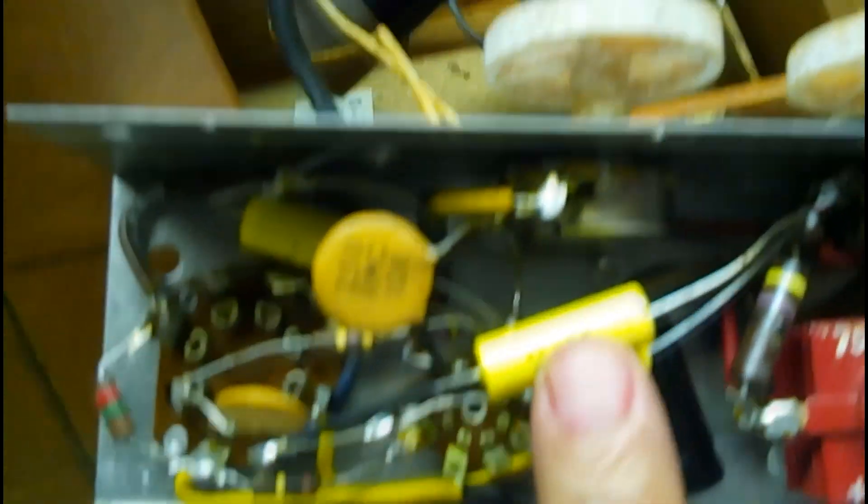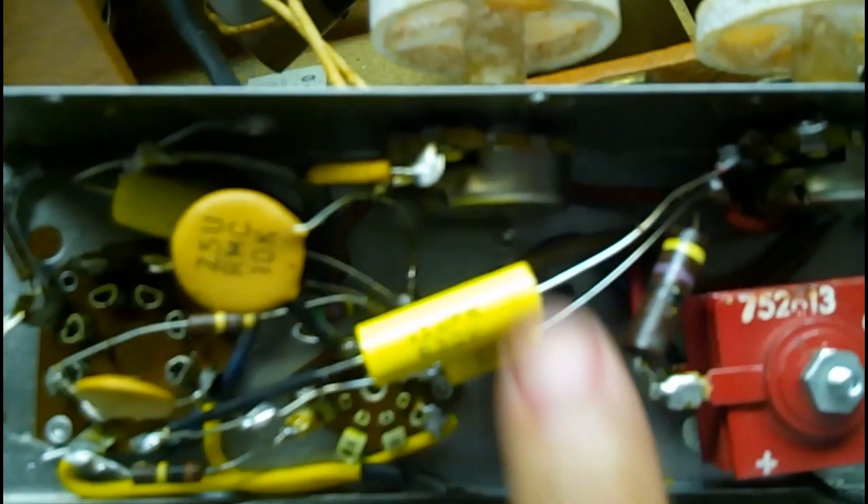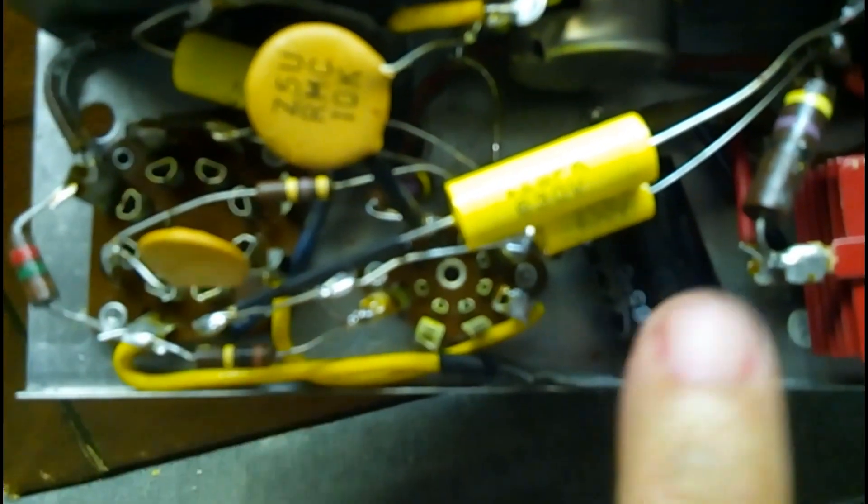I got to get a diode to replace this selenium rectifier. I have run a signal through the volume control to the grid of the first tube and had a nice good signal coming out. There's no hum at all, so the AF amplifier tube here is doing good, and the final amp is doing well.